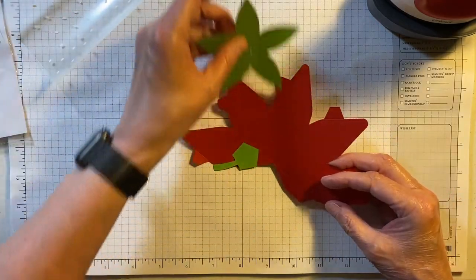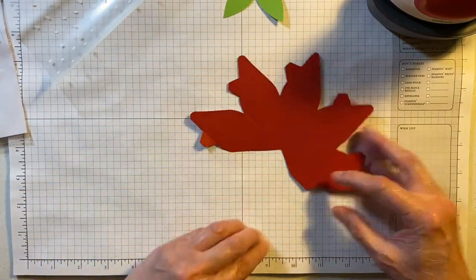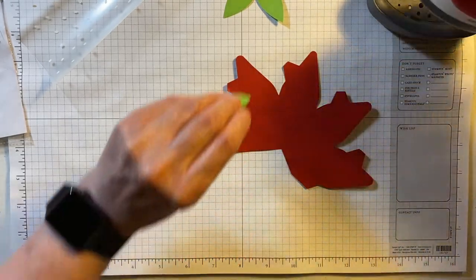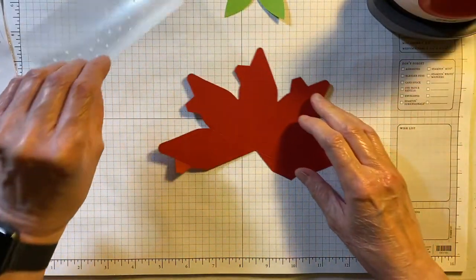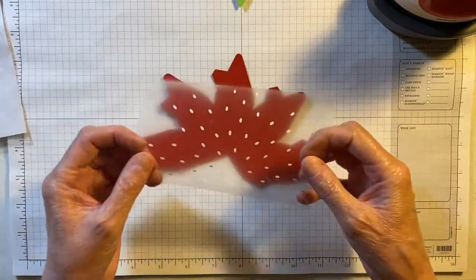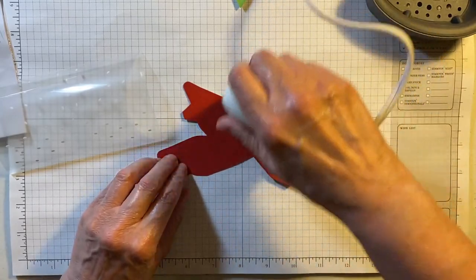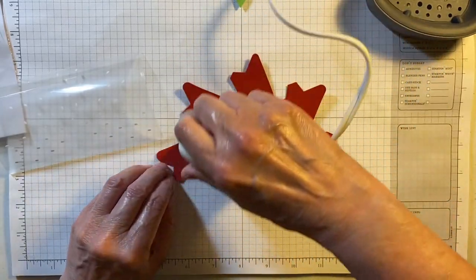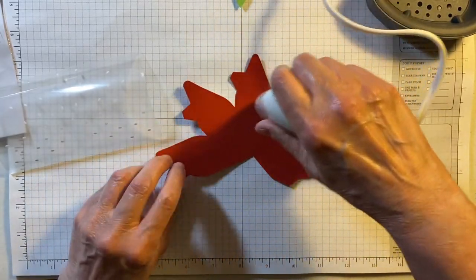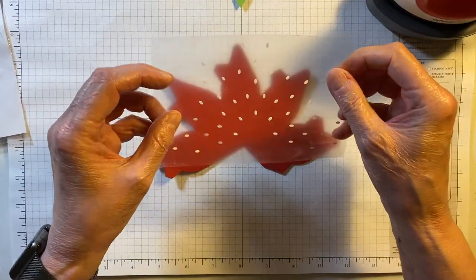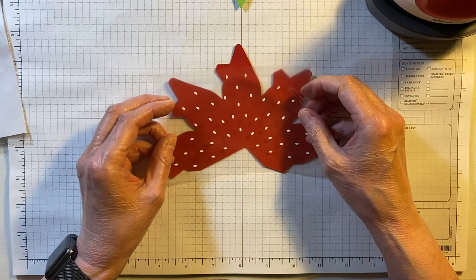So the first thing I want to do—I've already got my little EasyPress, I'm using the small EasyPress—and I'm going to iron my cardstock first, and then I'm going to add these little seed things.